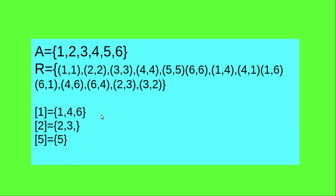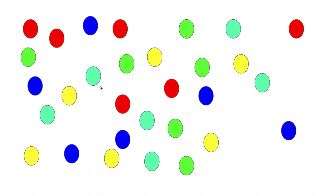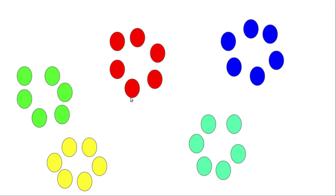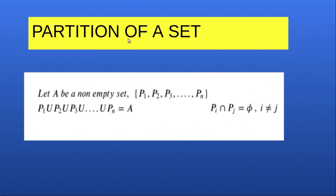Consider a set of ellipses of different colors — this illustrates a partition based on colors. Formally, for a non-empty set A, a collection {P1, P2, P3, ..., Pn} is said to be a partition of A if their union P1 ∪ P2 ∪ ... ∪ Pn = A, and the sets are pairwise disjoint, meaning Pi ∩ Pj = ∅ for i ≠ j. This collection is known as a partition of set A.